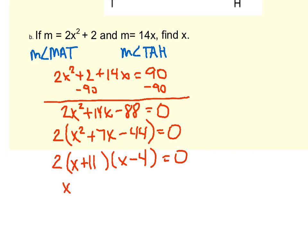Remember to solve, you just set your factors equal to 0. So we get two answers: x equals negative 11 and x equals 4.